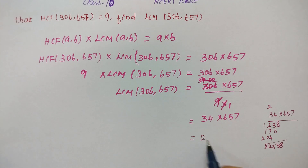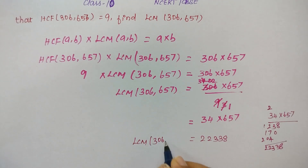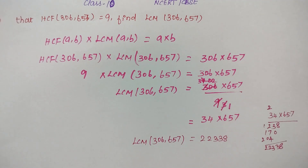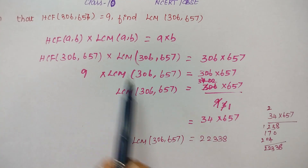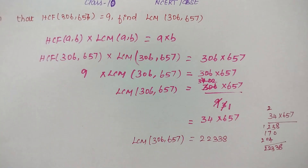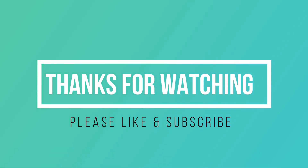So the answer is 22,338. Therefore, LCM of 306 and 657 is 22,338. This is how we find LCM when HCF is given, using this method. Thank you.